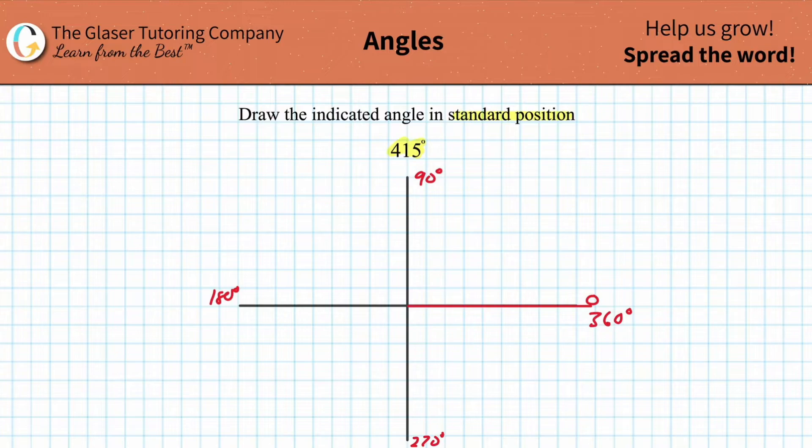But now, wait a minute. What happens if I kept going? What happens if I rotated this around and then back around again? What would this new measure be? Well, it wouldn't be 90 anymore. It would be 360 plus 90, which would then work out to be 450.